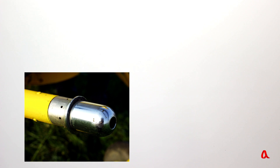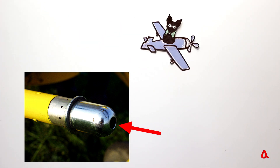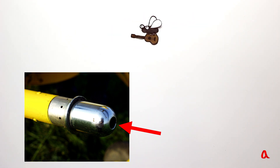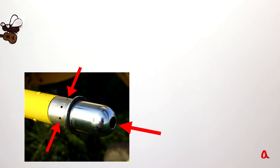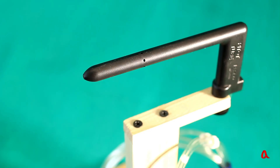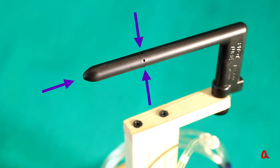A Pitot tube installed on a plane or a helicopter works according to the same principle of measuring the pressure difference. The inlet pressure adds up from static air pressure and velocity pressure. These apertures in the tube side are for measuring static pressure. This tube has a central aperture that has to be directed towards the oncoming flow and side apertures that measure static air pressure.